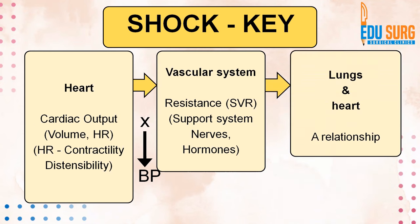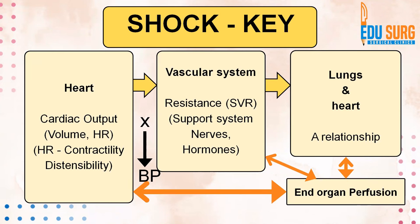The other relationship is between the lungs and the heart. I call it a relationship because if the lungs start failing, the heart will get affected, and if the heart starts failing, the lung will bear the brunt. If the heart is failing, you see pulmonary overload. If the lungs have failed — for example, there is pulmonary embolism — you see right heart failure.